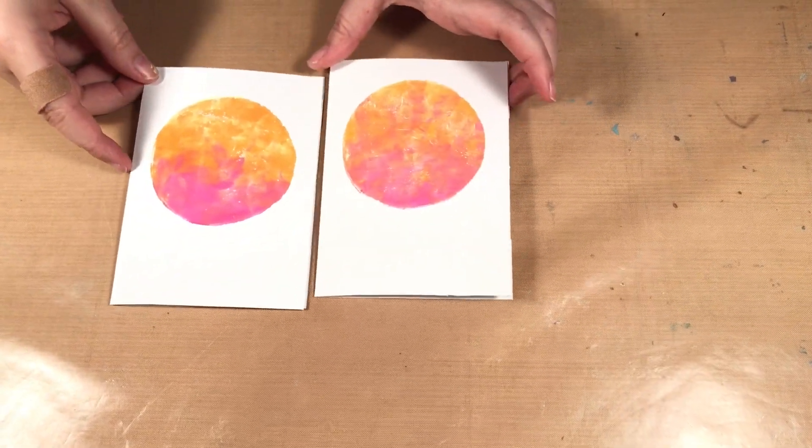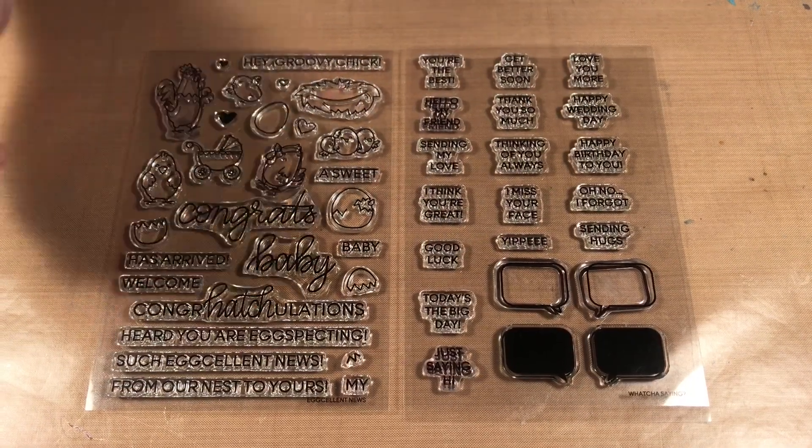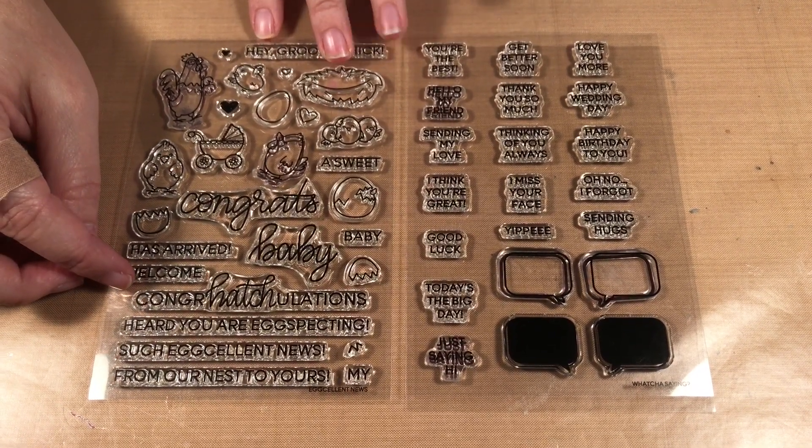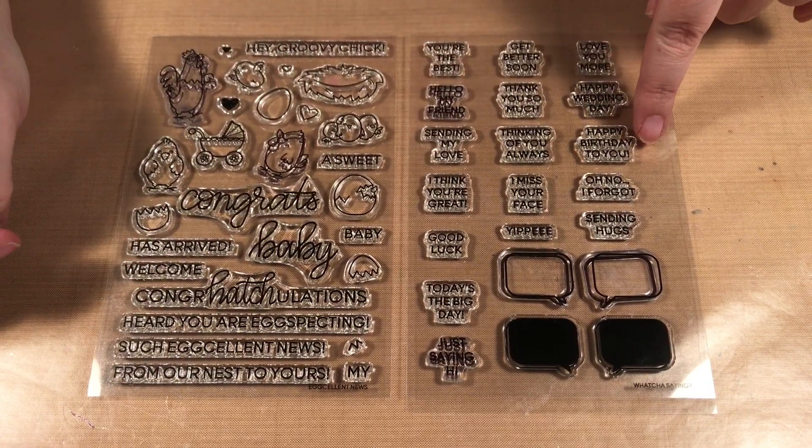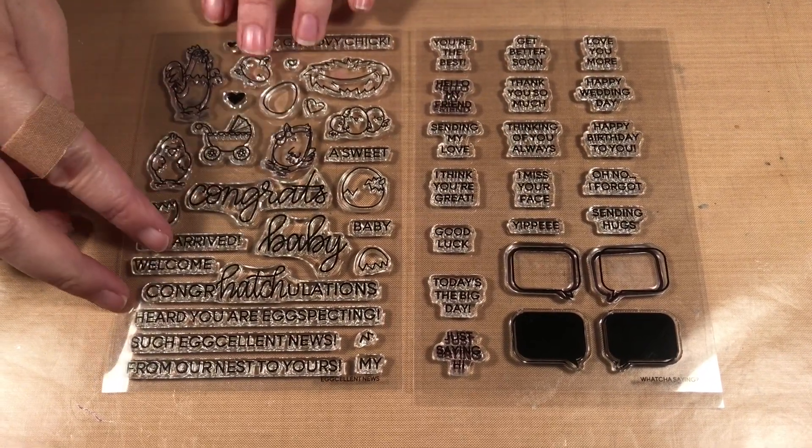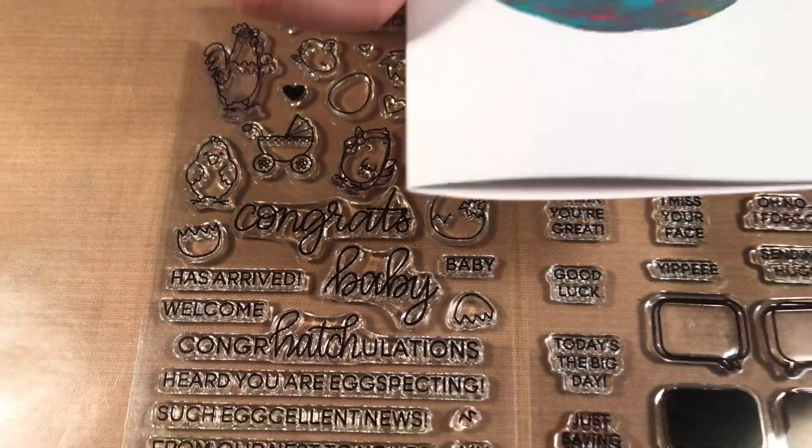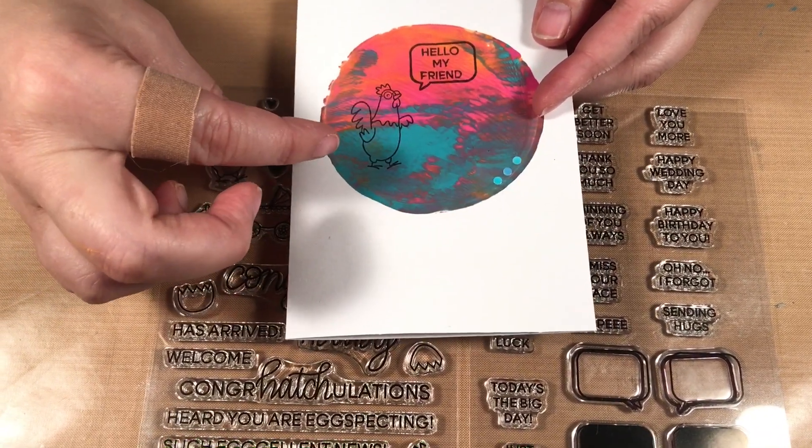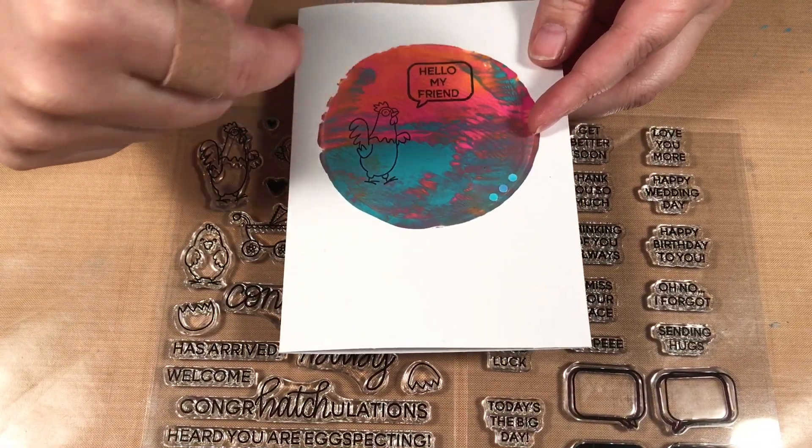Now it's time to move on to the stamping. I have two stamp sets here from Heffy Doodle. This one's called Eggcellent News and this one is Whatcha Saying. You'll notice that the stamps are very small, so that's why I decided if I started with a focal point it would already draw you into that little area so the stamp doesn't get lost on the page. That's why I decided to do the circle background.